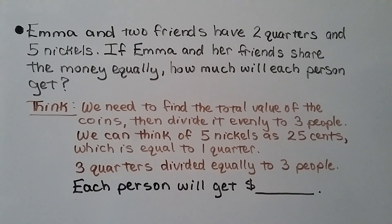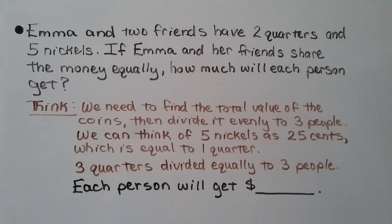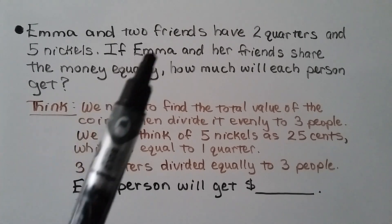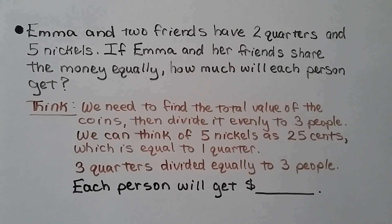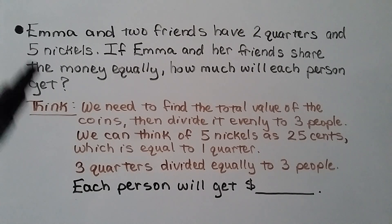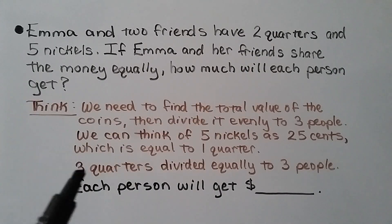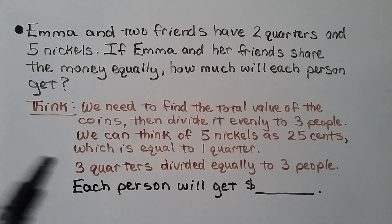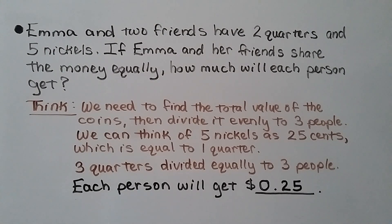Emma and two friends have two quarters and five nickels. If they share the money equally, how much will each person get? We find the total value, then divide evenly among three people. Five nickels equal twenty-five cents, which is the same as one quarter, so we have three quarters total. Three quarters divided equally among three people means each person gets twenty-five cents.